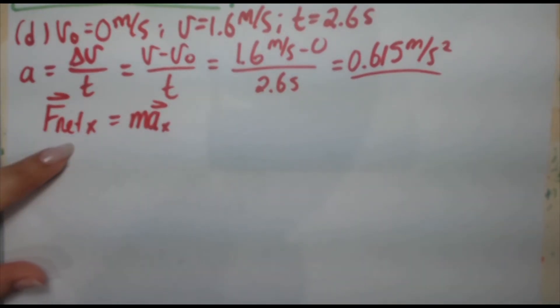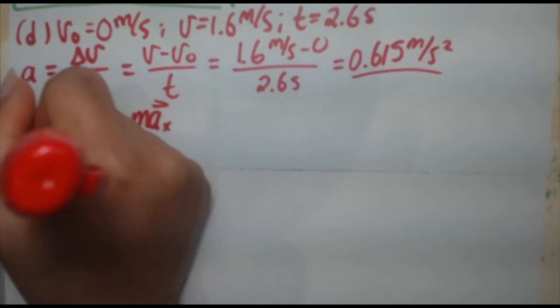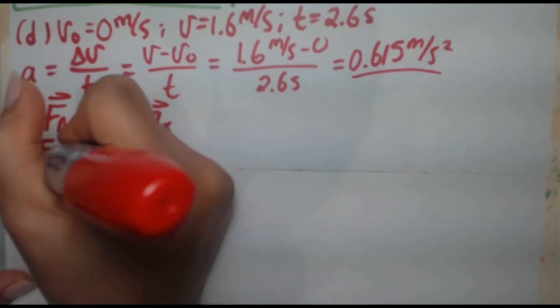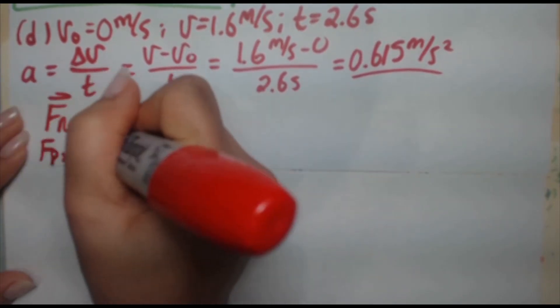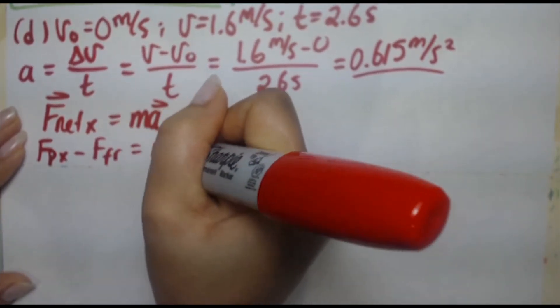Now, in the X direction, remember, we've got FPX and F friction. So this is going to be FPX minus F friction equals MA.